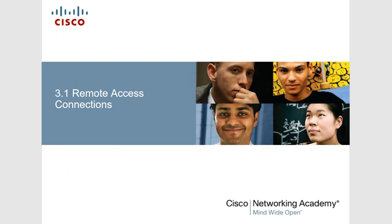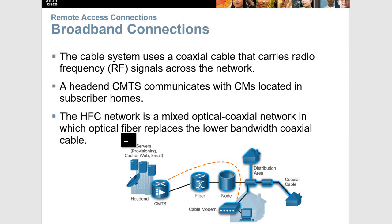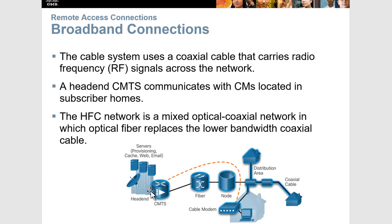We're going to start with remote access connections. Some broadband connection options: you've got the cable system, which carries radio frequency signals across the network. You've got your users with their cable modem on one end, and then you have a cable modem termination system on the provider's end. This head-end CMTS is a router with databases for providing internet services to the cable subscriber. This is typically a mix of coaxial and fiber — more and more fiber these days — carrying broadband, telephone service, and streaming video.